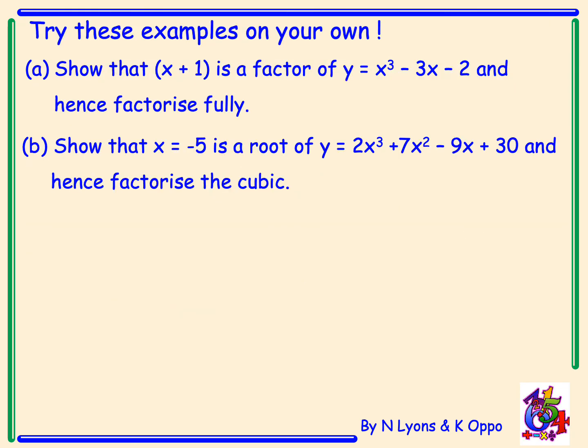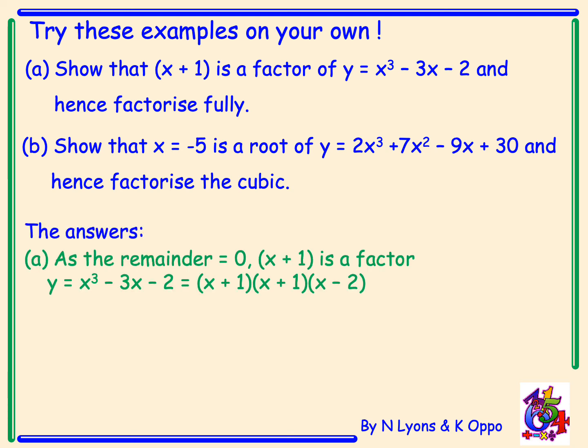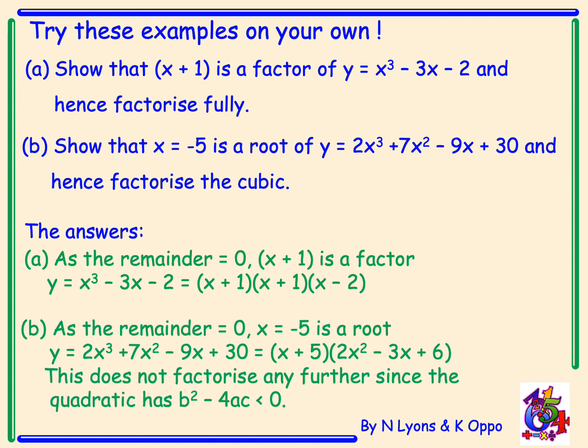Try these examples on your own — please pause the video. The answers: for part (a), the remainder is 0, and fully factorised we have (x + 1)(x + 1)(x + 1)(x - 2). For part (b), again the remainder is 0, and fully factorised it is (x + 5)(2x² - 3x + 6). The quadratic does not factorise further, which we can prove using the discriminant and finding it is less than 0.